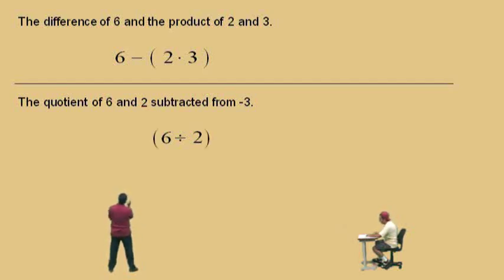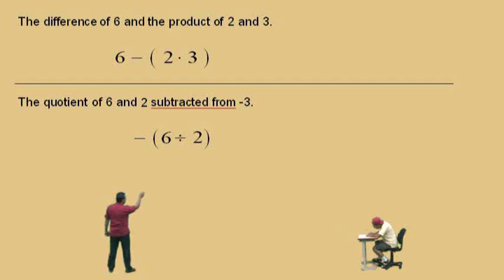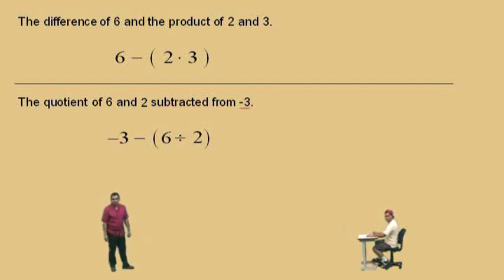You can't just put the subtraction there — you have to put a parenthesis saying there's the quotient of 6 and 2, and that quotient is being subtracted from. Notice we put the subtraction symbol out in front. The subtraction symbol's there. This quotient is being subtracted from what, Charlie? Negative 3. There we go, and that is our answer. That was a tough one!